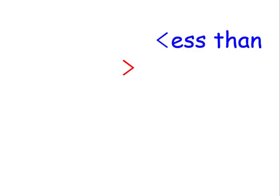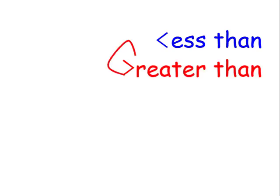Is the blue symbol less than or greater than, or is the red one less than or greater than? What makes me remember? I can write the word 'less than' with the less than symbol — it kind of looks like an L. A greater than symbol, you can kind of make a G out of it for greater than. Using your left hand, you can make a less than symbol. Left means less.